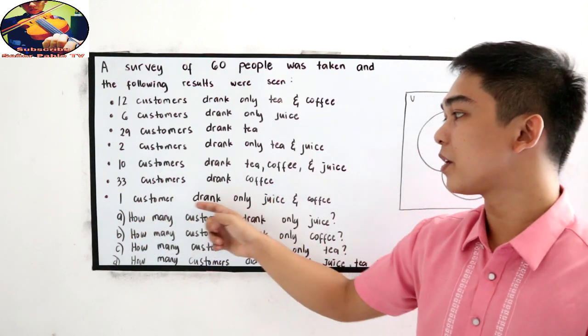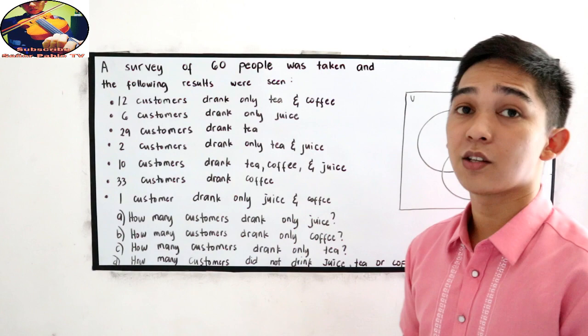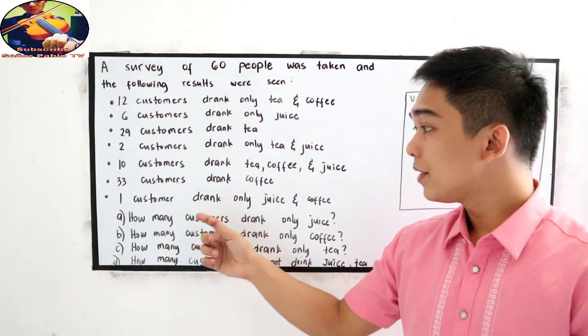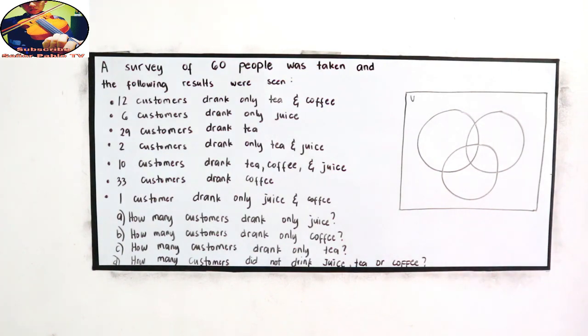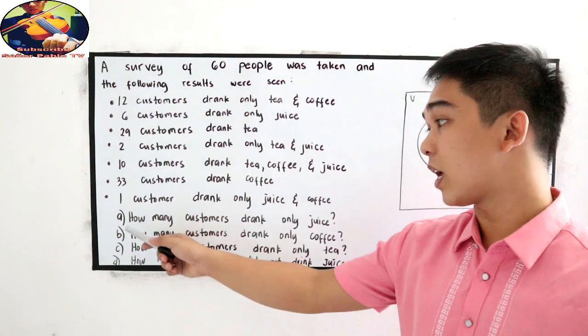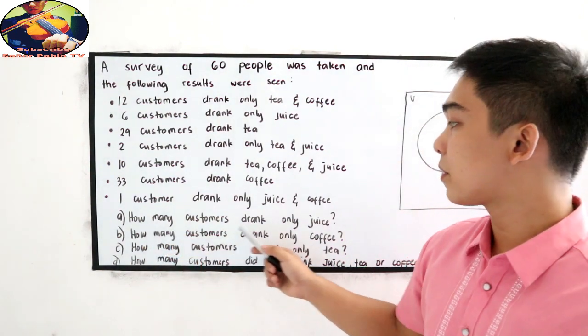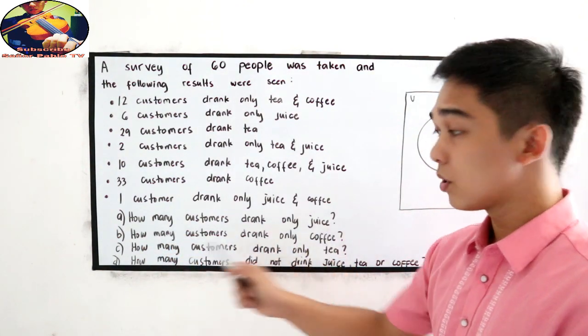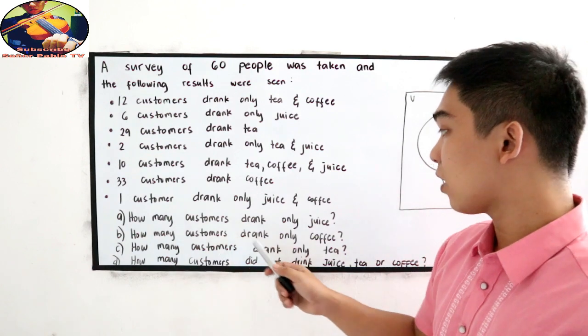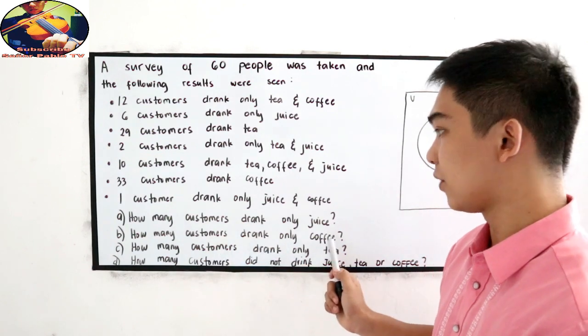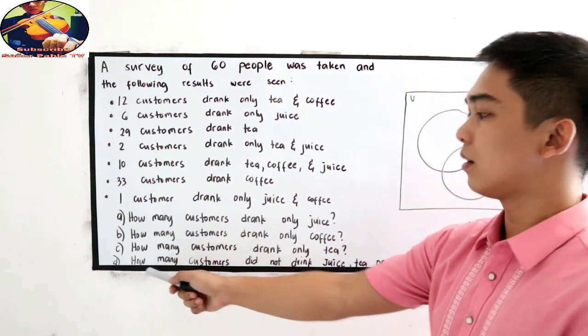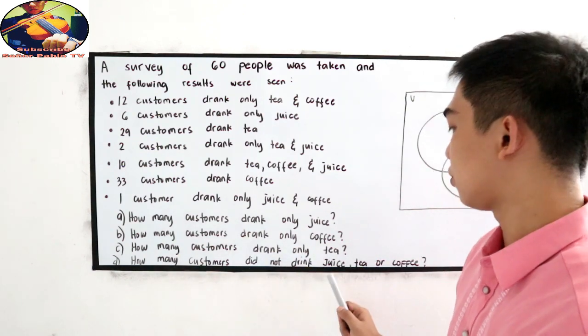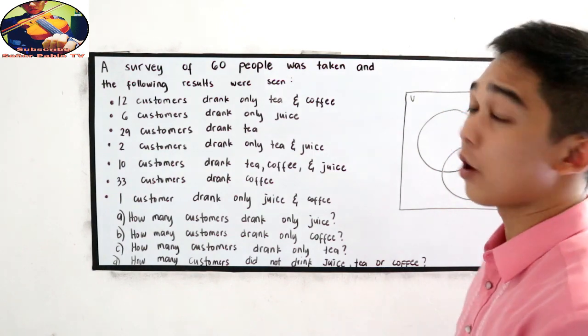And 1 customer drank only juice and coffee. Now we're going to answer letter A, B, C and D. For letter A, how many customers drank only juice? How many customers drank only coffee? How many customers drank only tea? How many customers did not drink juice, tea or coffee?